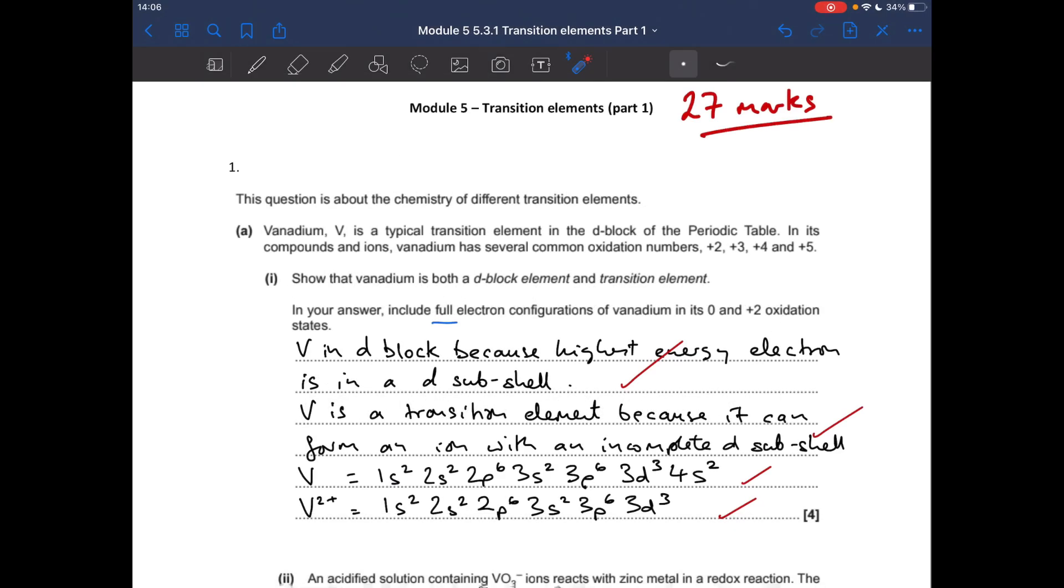Question one: show that vanadium is both a D-block element and transition element. Got to include full electron configuration of vanadium in zero and plus two oxidation states. Starting with why it's in the D-block, because its highest energy electron is in a D-sub-shell. Why it's a transition element? Because it can form at least one ion with an incomplete D-sub-shell.